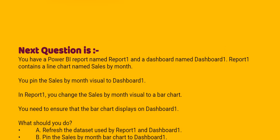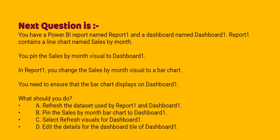Our question is: you have a Power BI report named Report1 and a dashboard named Dashboard1. Report1 contains a line chart named Sales by Month. You pin the Sales by Month visual to Dashboard1. In Report1, you change the Sales by Month visual to a bar chart. You need to ensure that the bar chart displays on Dashboard1.